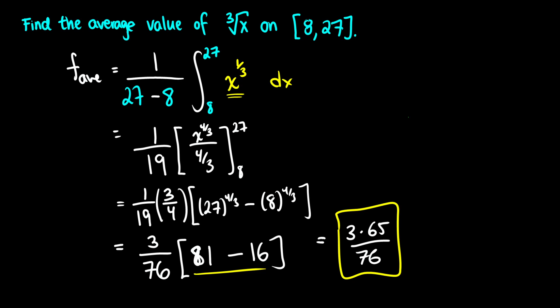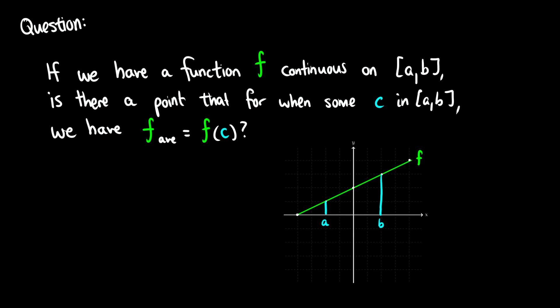Now that we have the average value of a function, there's an interesting question we can ask. If we have a function that's continuous on an interval, is there going to be some point c in that interval where the average is equal to f of c? For a straight line from a to b, by symmetry we can see that the average is right in the center. So we're asking: is there some c where on that curve we have f of c equal to the average? What we find is that for any continuous function on [a, b], this will always be true.